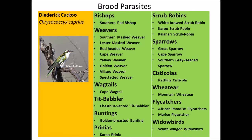Hosts for the Diederick's Cuckoo include a plethora of birds. From the family Ploceidae: the southern red bishop and weavers — southern masked weaver, lesser masked weaver, red-headed weaver, cape weaver, yellow weaver, golden weaver, village weaver, and spectacle weaver. Also the cape wagtail, chestnut-vented titbabbler, golden-breasted bunting, Karoo prinia, various scrub robins including white-browed, Karoo, and Kalahari scrub robin, sparrows such as the southern grey-headed sparrow, cave sparrow, and great sparrow, the rattling cisticola, mountain wheatear, African paradise flycatcher, marico flycatcher, and the white-winged widowbird.